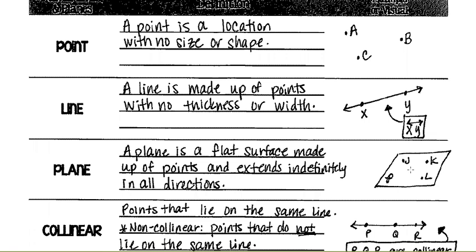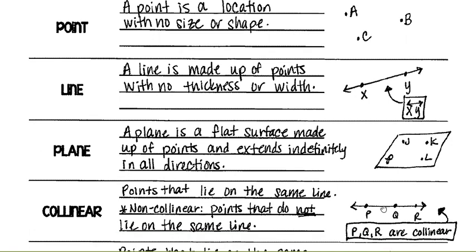Collinear: you'll see this a couple of times throughout. It means points that lie on the same line. P, Q, and R are collinear because they lie on the same line. Non-collinear is the opposite — points that do not lie on the same line. So if I add point Z, then P, Z, Q, R is non-collinear.